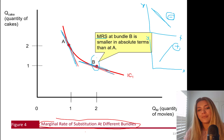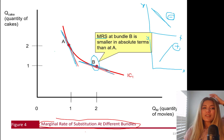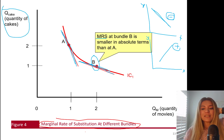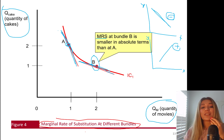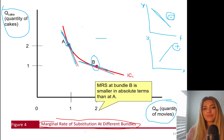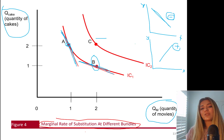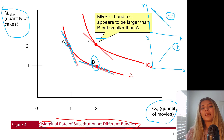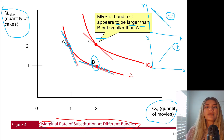That means that at point B, you are willing to give up fewer cakes — whatever you have on the y-axis — for movies, one more movie, compared to point A. At point A, you are willing to give up a lot of cakes — steeper slope — to get one more movie. The marginal rate of substitution at bundle C appears to be larger than B but smaller than A, so it's in the middle.